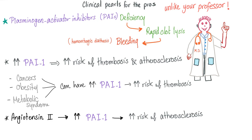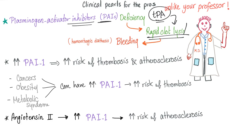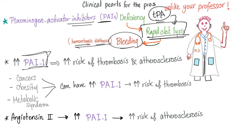Plasminogen activator inhibitor deficiency will lead to — you have a deficiency of the inhibitor, which means TPA is left free. When TPA is free, it will cause fibrinolysis and clot lysis, which will lead to bleeding, or if you want to be sophisticated in front of your professor, say hemorrhagic diathesis, which just means a bleeding problem. Increased PAI will lead to increased risk of thrombosis and atherosclerosis.